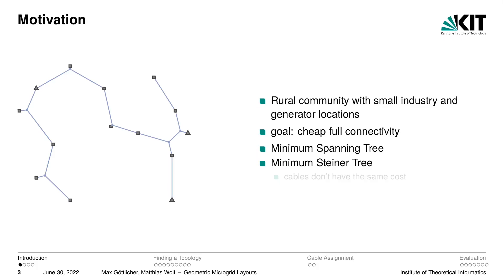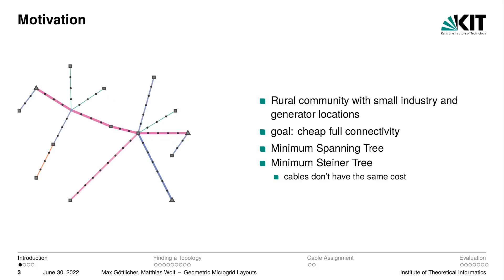So in this case the installed network on this topology might look more like this. However, if we consider different diameter cables with different costs, the actual cheapest network is not a minimum Steiner tree — instead it might look more like this. I will talk about how we can find such a network in a minute, but before that we will define what we are actually trying to solve here.